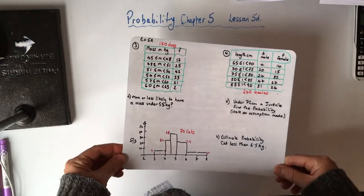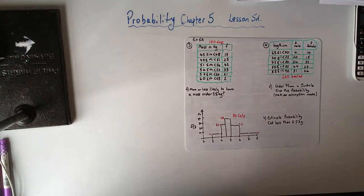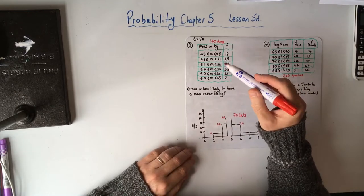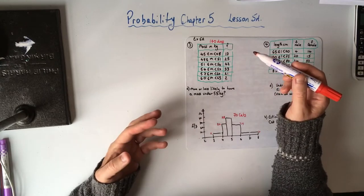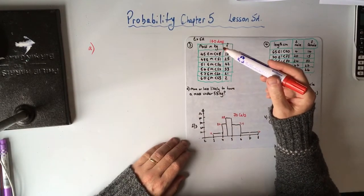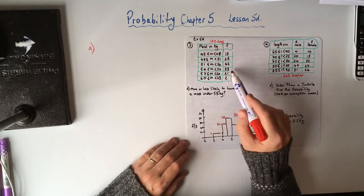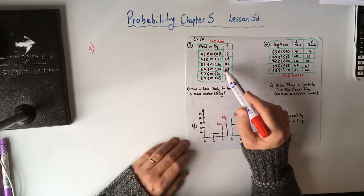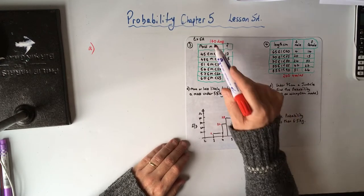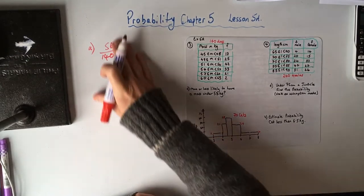So without further ado, here we go. As you can see, I've drawn question 3, I've got the table from question 3 here in exercise 5.8 and it's about these bull mastiffs, these dogs, and it's the weight of these dogs. It tells you in the question that there are 140 dogs that have been weighed and it's recorded in a table. Part A says find the probability that a dog has a mass of 54 kilograms or more, so this is more than 54. You're simply just doing 33, 21 and 2, adding them all. So there's 56 dogs, so the probability is 56 over 140.